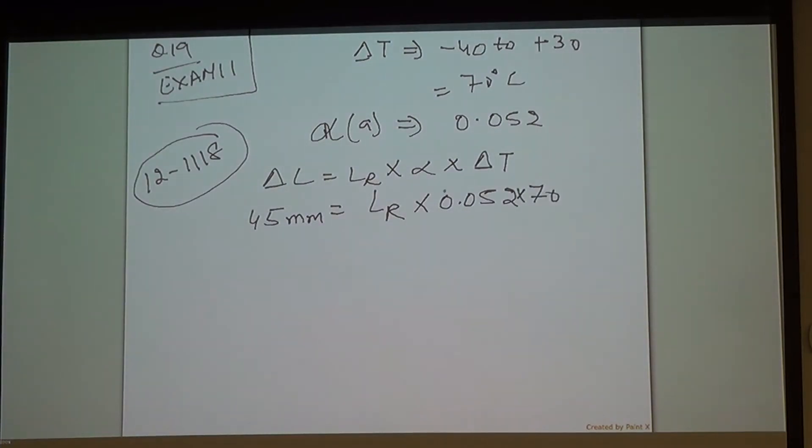45 mm. The rule that I'm following is 12-1118. Up to 45 mm of expansion, I do not need to install expansion joint. 45 mm equals length of the raceway not given, alpha 0.052, delta T 70 degrees. I'm going to ask Farid to multiply these two numbers for me. Multiply 0.052 and 70. Tell me what you got. 3.64.